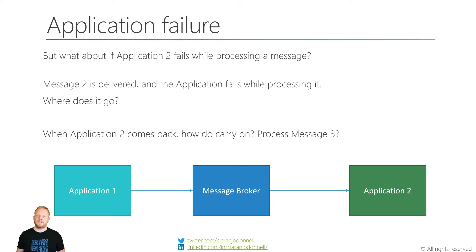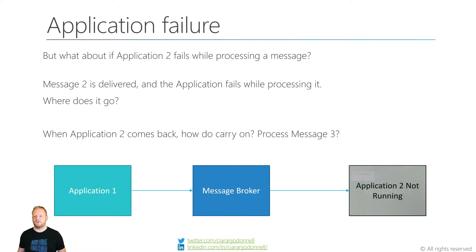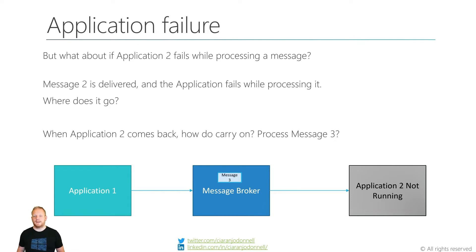But what happens if application two fails while it's processing a message? If we've got messages coming through our message broker towards application two, they're streaming through, message two gets received and the application fails while it's processing. We've got more messages coming through and they're being queued up by the message broker with the storage as we've talked about. But when application two comes back, how does it carry on? Does it somehow still know about message two or does it get message three from the message broker?